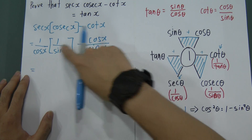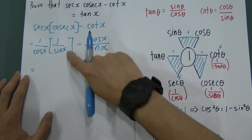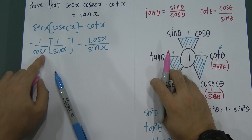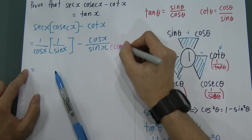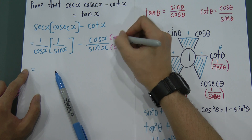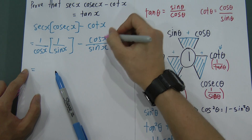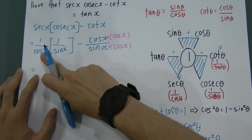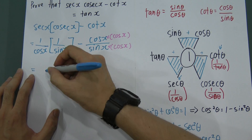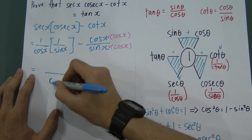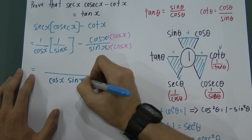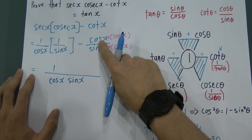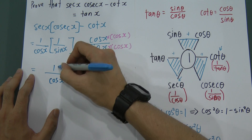Since the expression is a subtraction, my objective is to make the denominators the same. I have 1/(cos x · sin x) minus cos x / sin x. I multiply the second fraction's numerator and denominator by cos x, making both denominators cos x · sin x. So the combined fraction is: (1 − cos²x) / (cos x · sin x). I know cos²x = 1 − sin²x, so 1 − cos²x = sin²x.